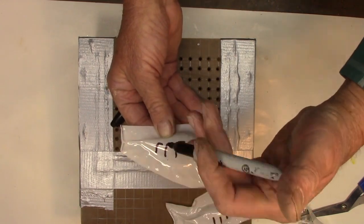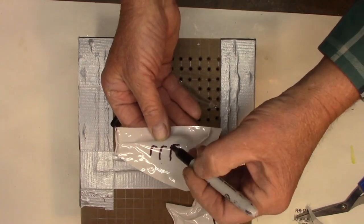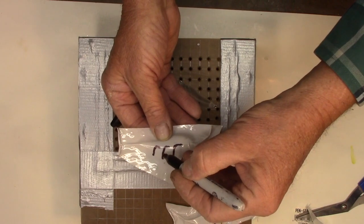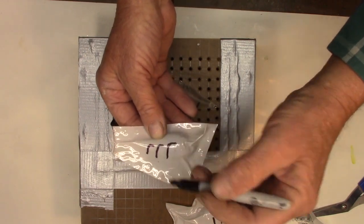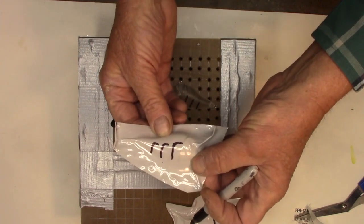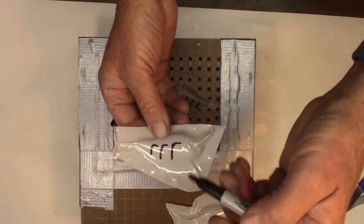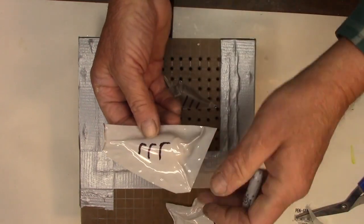By not quite going all the way and just cutting those out later, it makes your stencil a lot more secure. So when you're painting, you won't get this piece picking up and paint going underneath it.